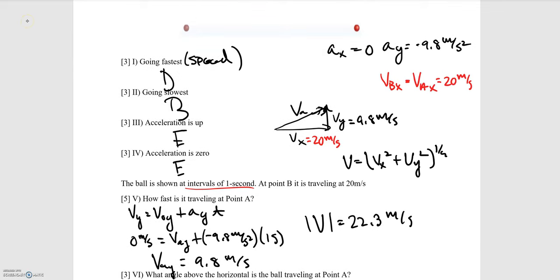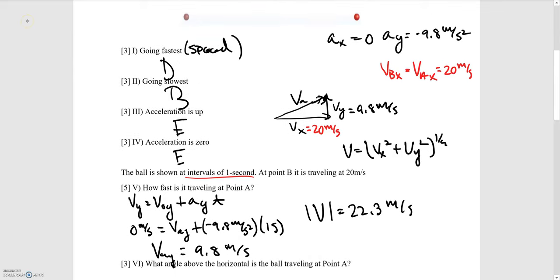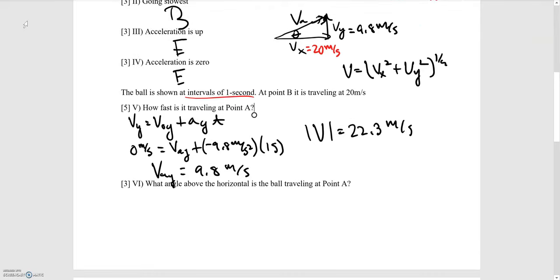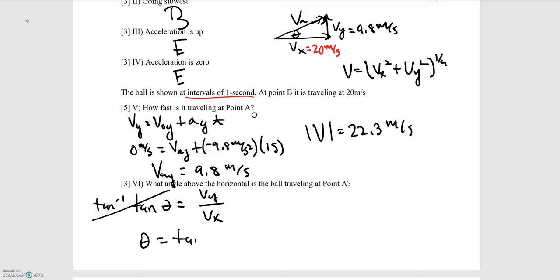Question 6 asks what angle above the horizontal the ball is traveling at point A. That angle is found using trig: tangent of theta equals the y component over the x component of velocity. Taking the inverse tangent of both sides, theta equals arctan(Vy / Vx) equals 26 degrees.